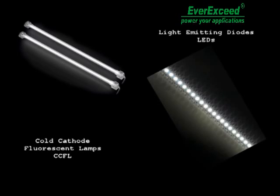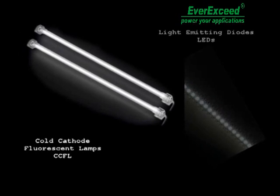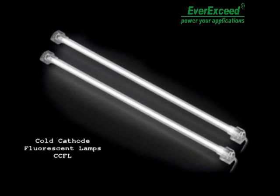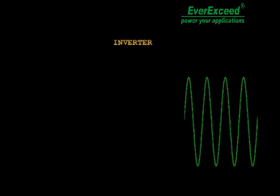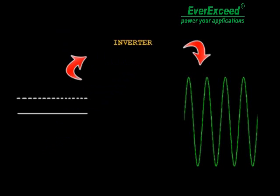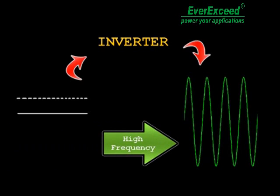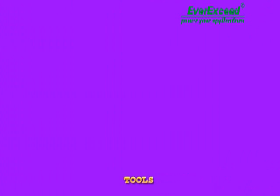Firstly, we are going to see how the cold cathode fluorescent lamps backlight technology works. A high alternate current voltage produced from a continuous current voltage is necessary. Because of that, the source that makes this work is called an inverter. At the same time, it is necessary to have a high frequency alternate voltage to avoid interferences.